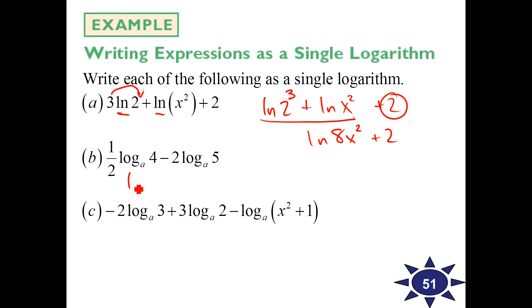What about this one? This is going to be log base a of 4 to the 1 half which is square root of 4 minus log base a of 5 squared which is 25. So that's going to equal log base a square root of 4 is 2 over 25.